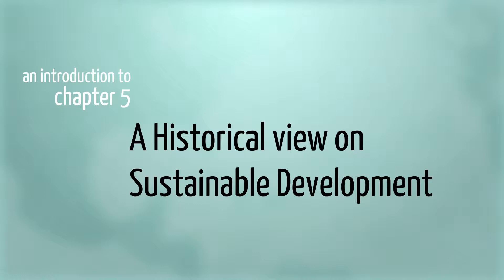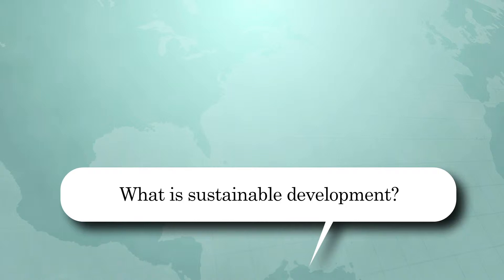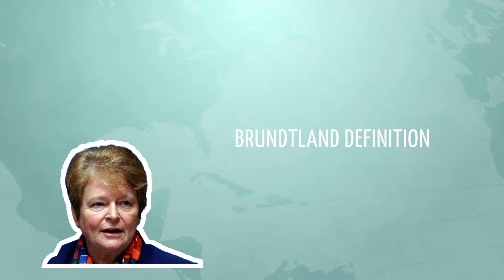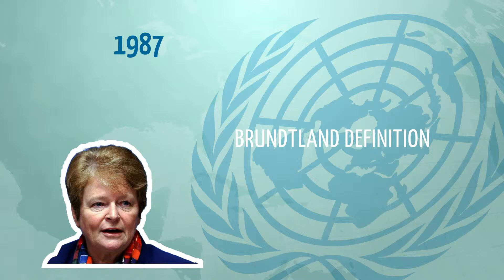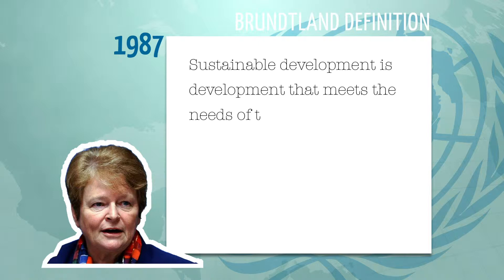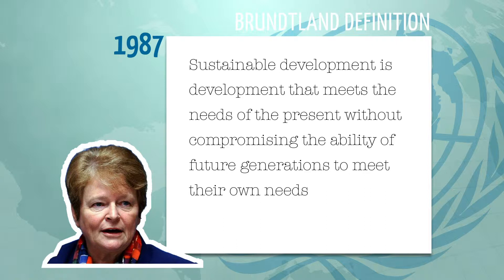An introduction to Chapter 5: A Historical View on Sustainable Development. What is sustainable development? There are different definitions of sustainable development, but the most well-known is the Brundtland definition, which was originally coined by the United Nations in 1987. They define sustainable development as development that meets the needs of the present without compromising the ability of future generations to meet their own needs.